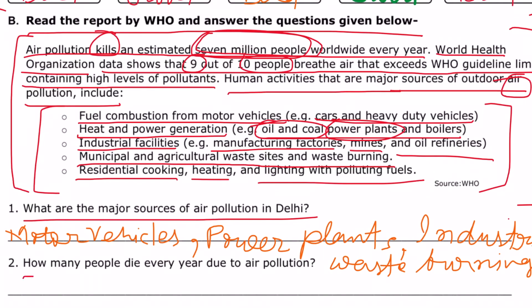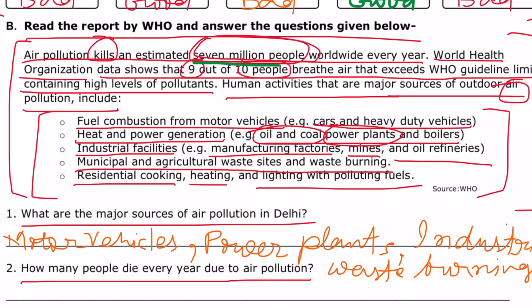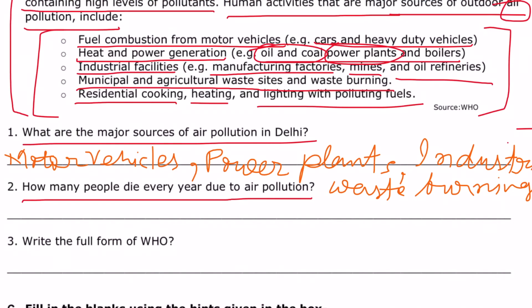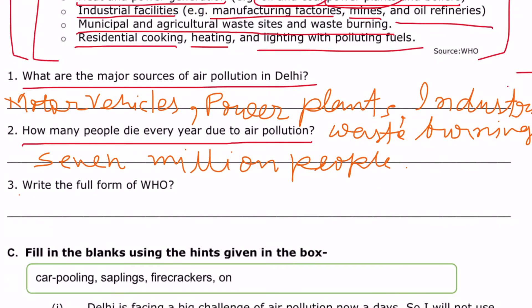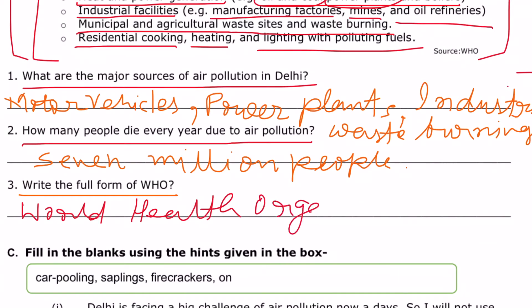Question number two: how many people die every year due to air pollution? Seven million people worldwide every year die from air pollution, so the answer is 7 million people. The next question is: write the full form of WHO. The full form of WHO is World Health Organization.